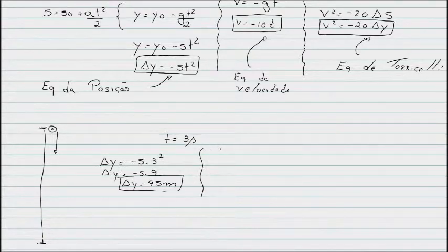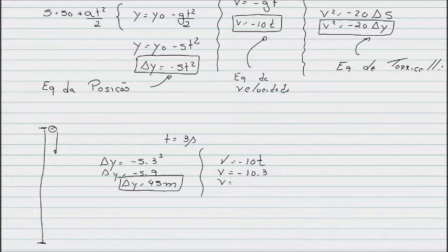Okay, 45 meters. But what velocity did it reach the ground with? No problem. Velocity equals minus 10t. Velocity equals minus 10 times 3 seconds that it was falling. The final velocity when it hit the ground is 30 meters per second. So you see that with just these equations I can determine any relationship.